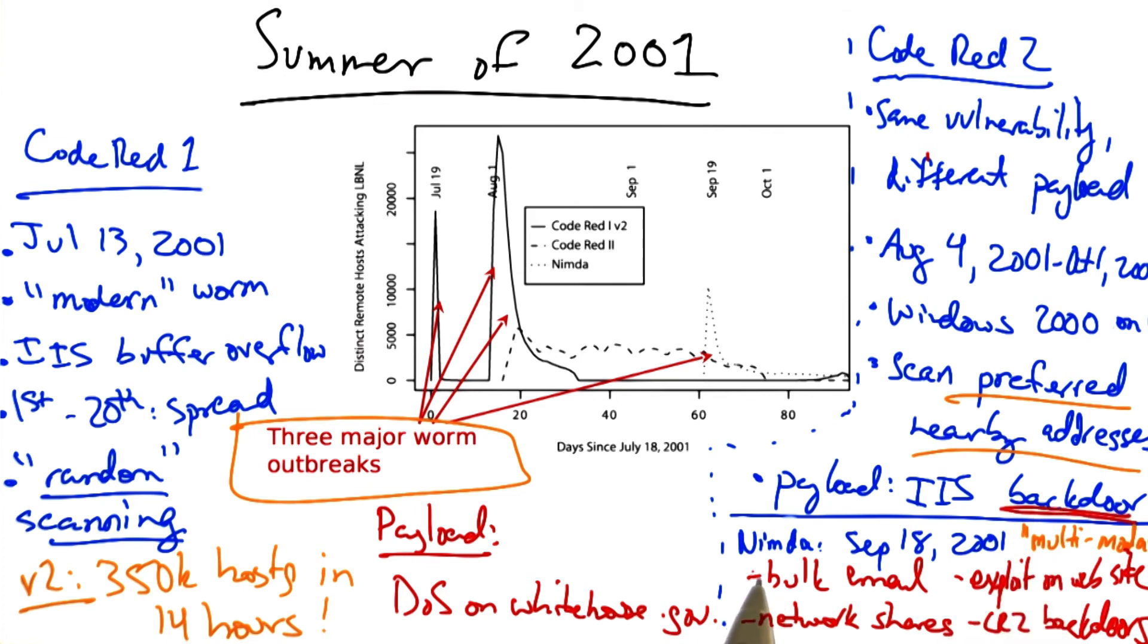The interesting thing about the multimodal nature of the Nimda worm is that signature-based defenses don't necessarily help. Because of the many ways that it could spread, for example, by email or via a website exploit, Nimda actually leaped firewalls. Most of the firewalls passed the emails carrying Nimda completely untouched. It was a brand new infection with an unknown signature, and thus scanners couldn't detect it.